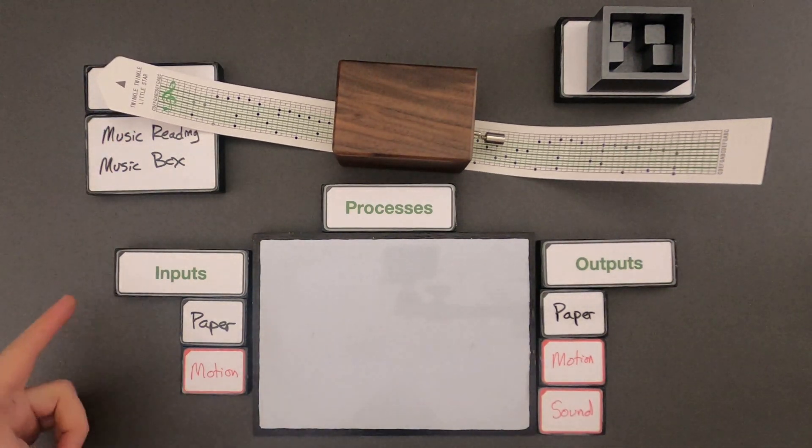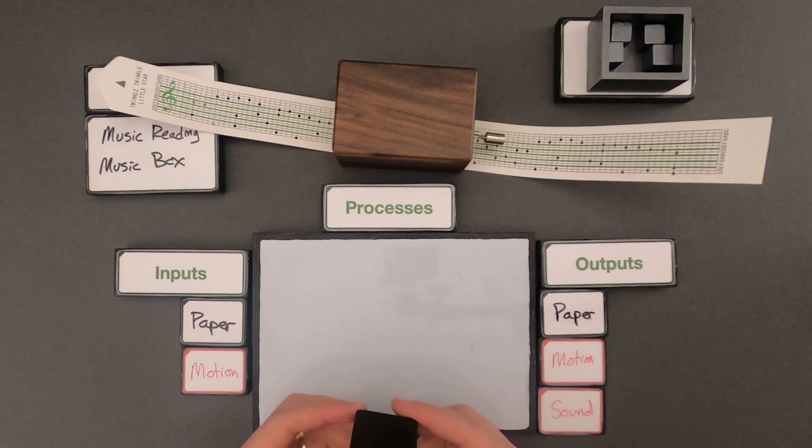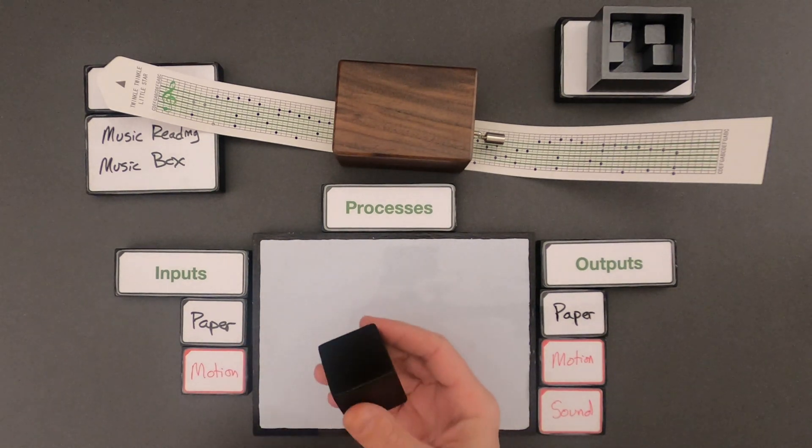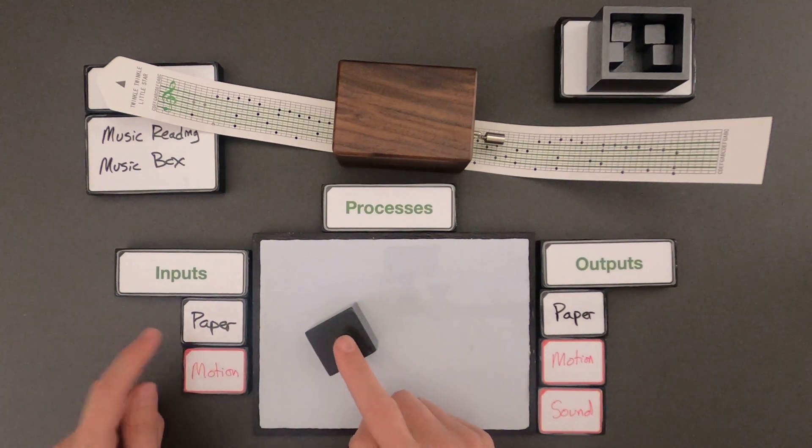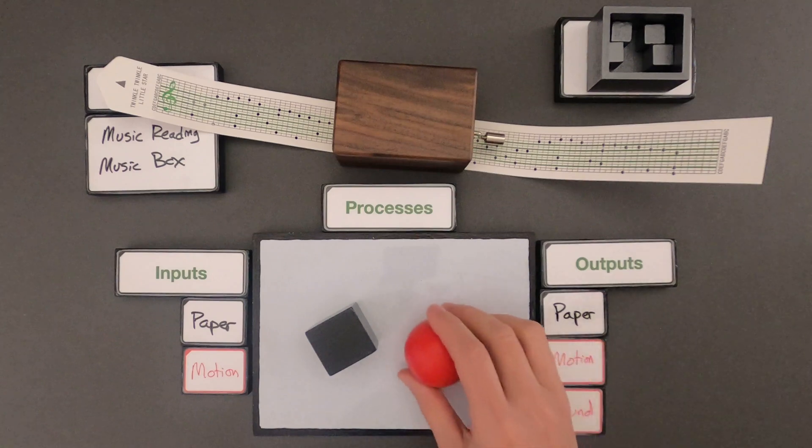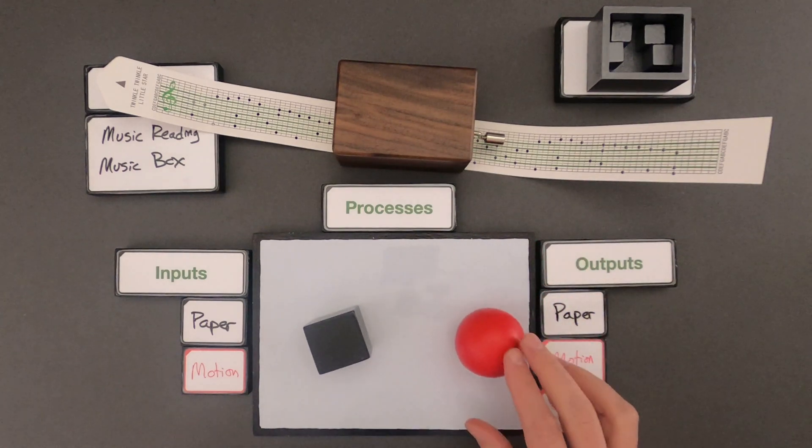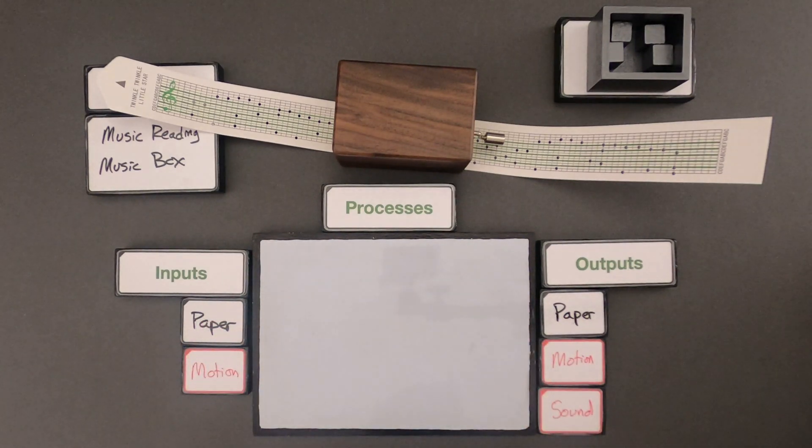So what I've identified are the inputs into the system and the outputs. You'll notice that I'm using different color and the reason why is we're using a different concept. In my model anything that's black is going to be matter. Matter, remember, is just things in the universe. So paper is an example of a thing. Red will represent energy, which is another concept that I'll use. And remember, energy makes things change. And so that's the color that I'm using.